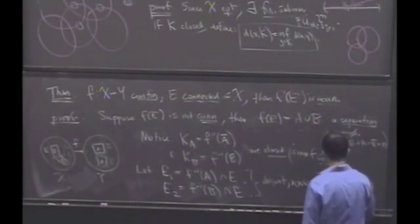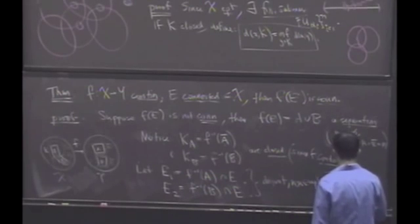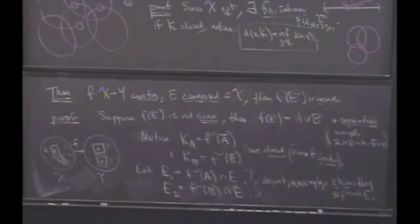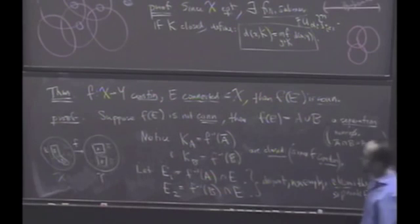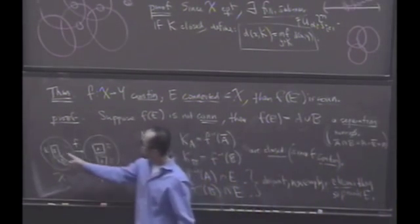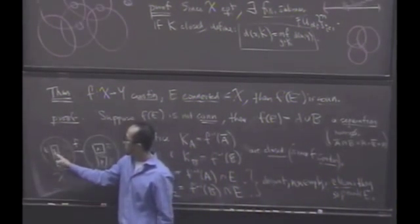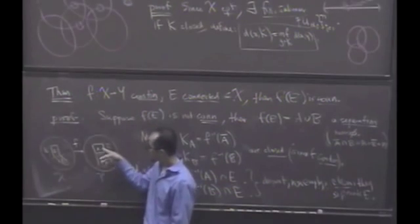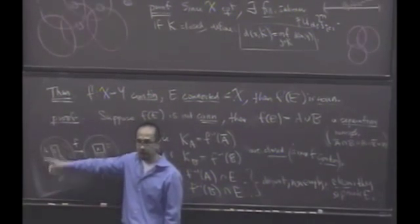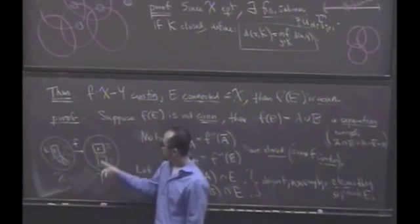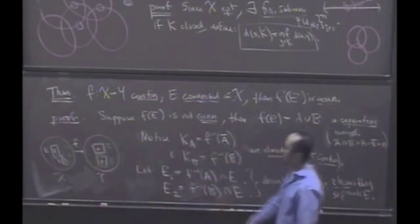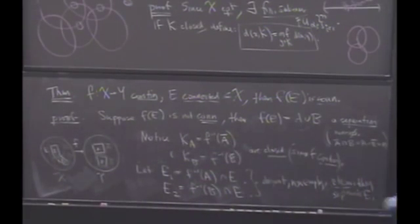Let's see why. Notice that E1 is contained in Ka, which is the inverse image of the closure of A.